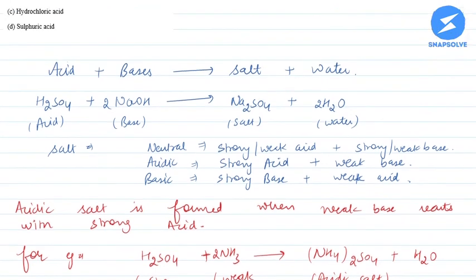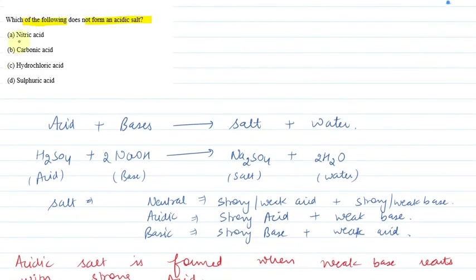So now we have examples. We are talking about, most first, we have nitric acid. So nitric acid is a strong acid, so it will form acidic salt. We can write that carbonic acid is a weak acid. Hydrochloric acid is a strong acid and sulfuric acid is a strong acid.